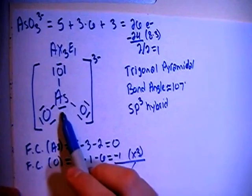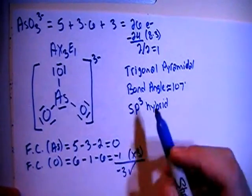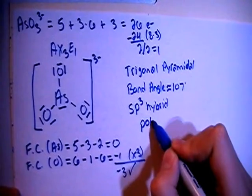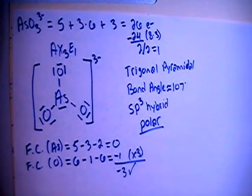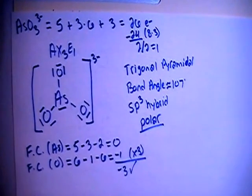Because of this non-bonding pair of electrons on top here, that is going to make this a polar ion. That is pretty much it for this one. If you have any questions, please let me know, and thanks for watching.